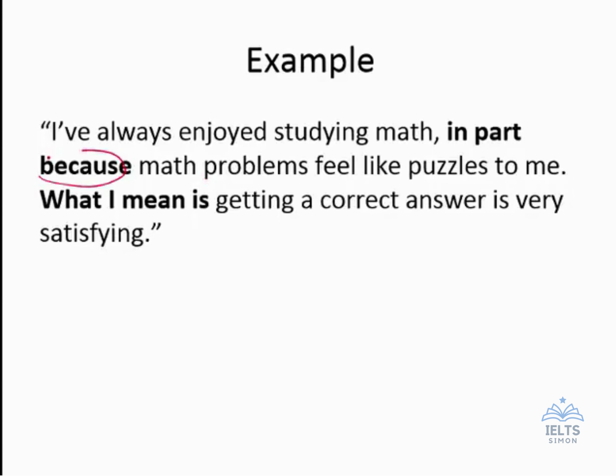Okay, this 'because' provides a direct relationship between sentence two and the first one now. And this one down here, 'what I mean is' clarifies. It gives an additional piece of information to show that getting a correct answer is very satisfying. Okay, that clarifies this person's feelings about puzzles. They enjoy puzzles. And that phrase makes that especially clear.